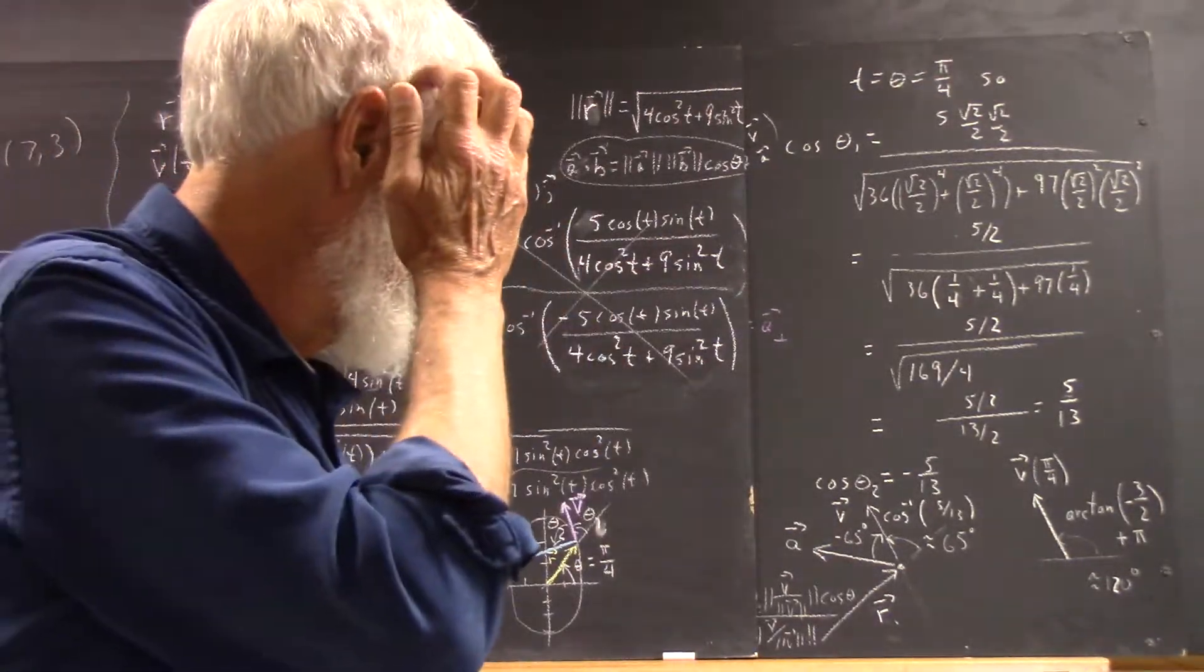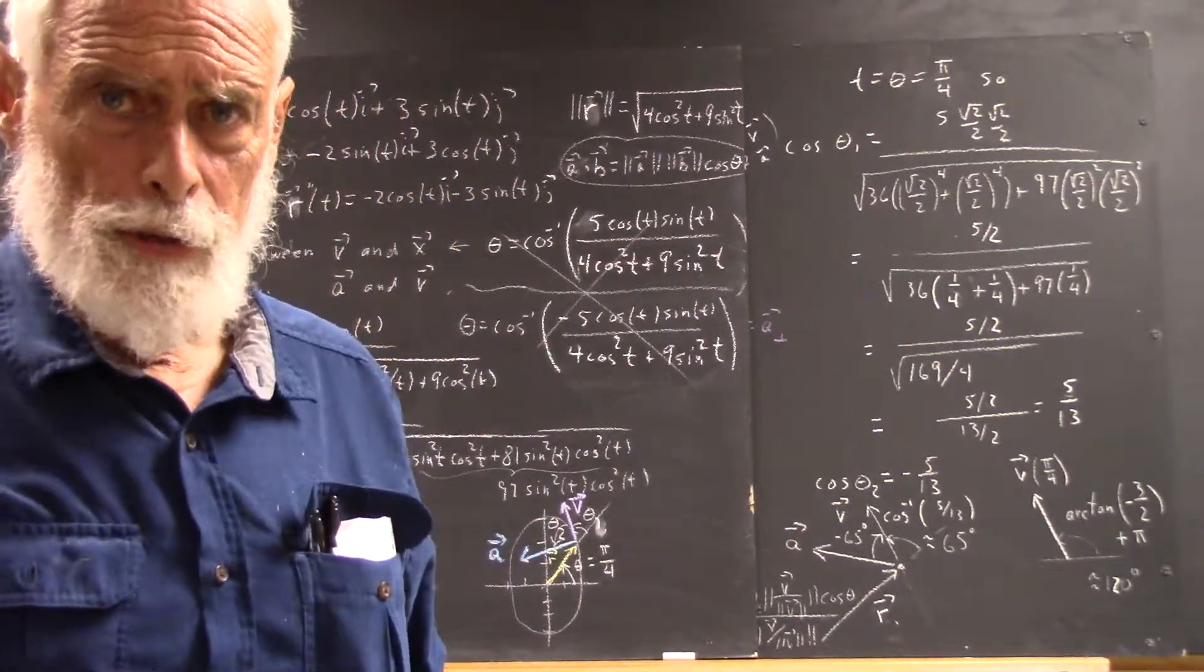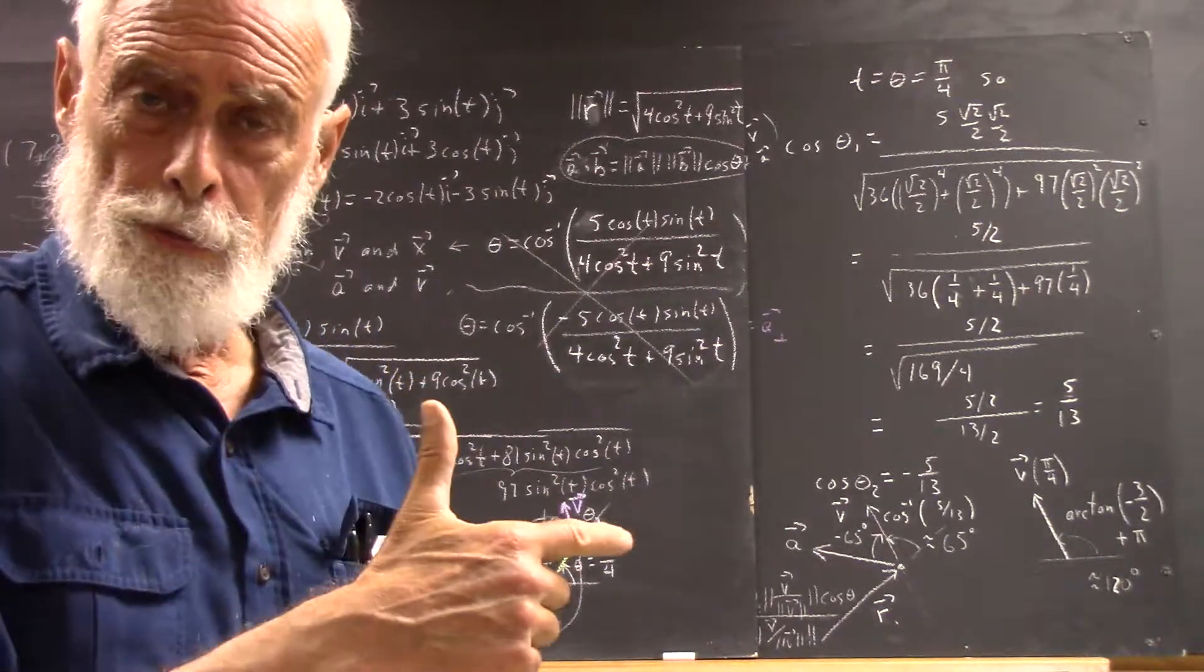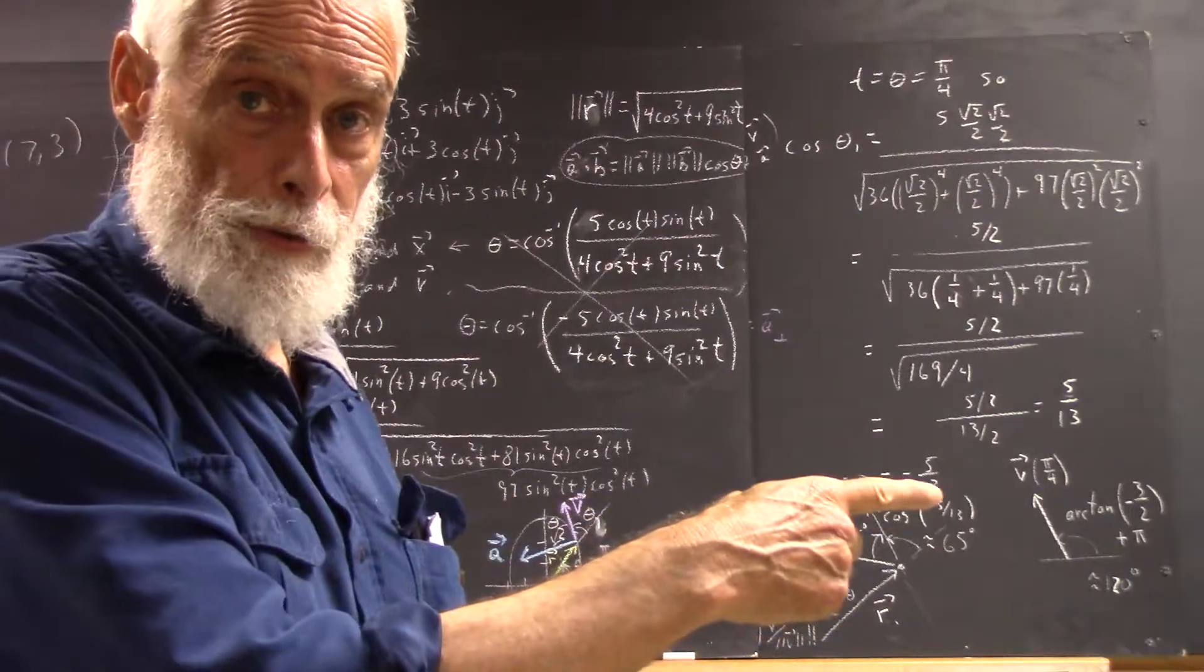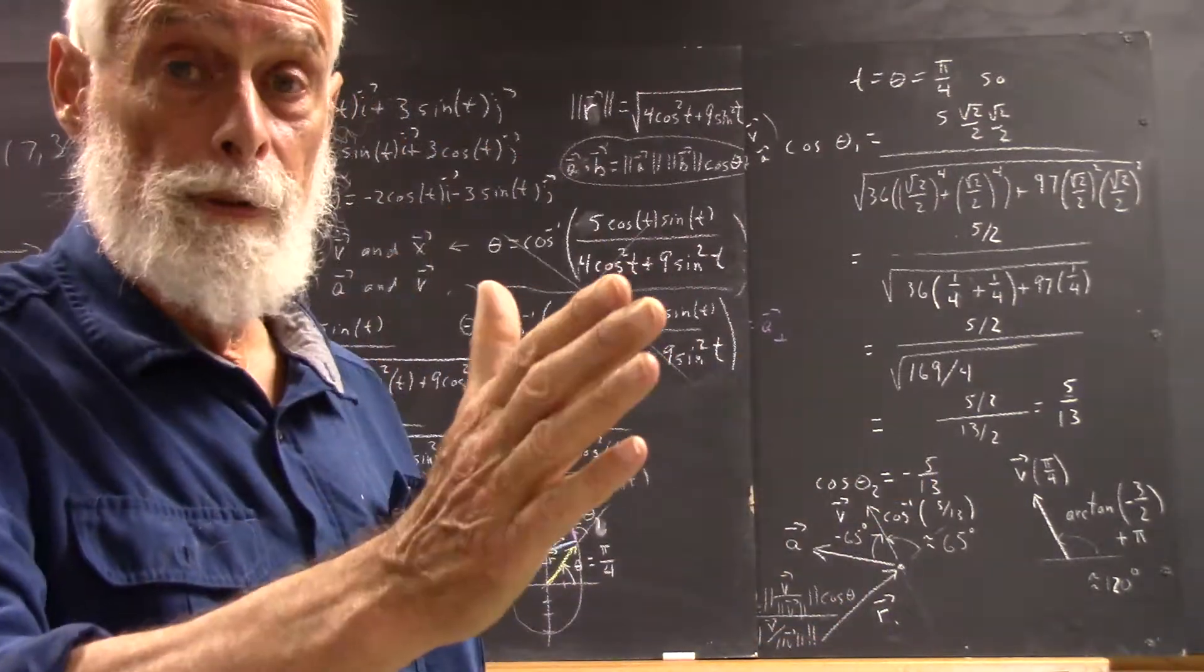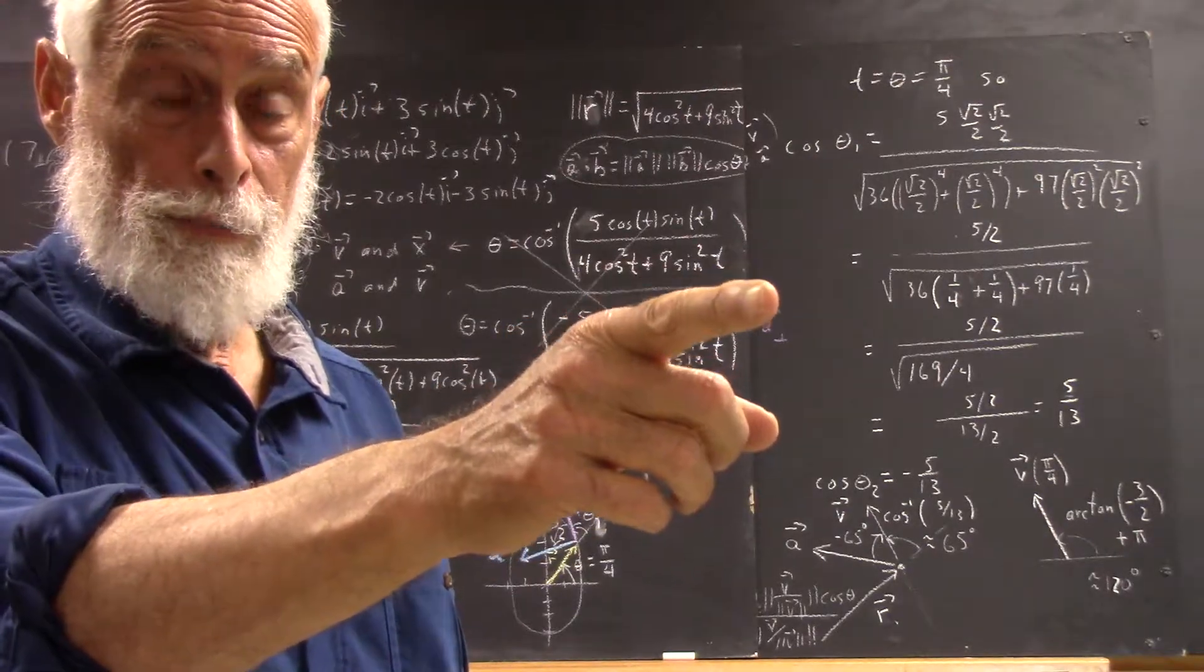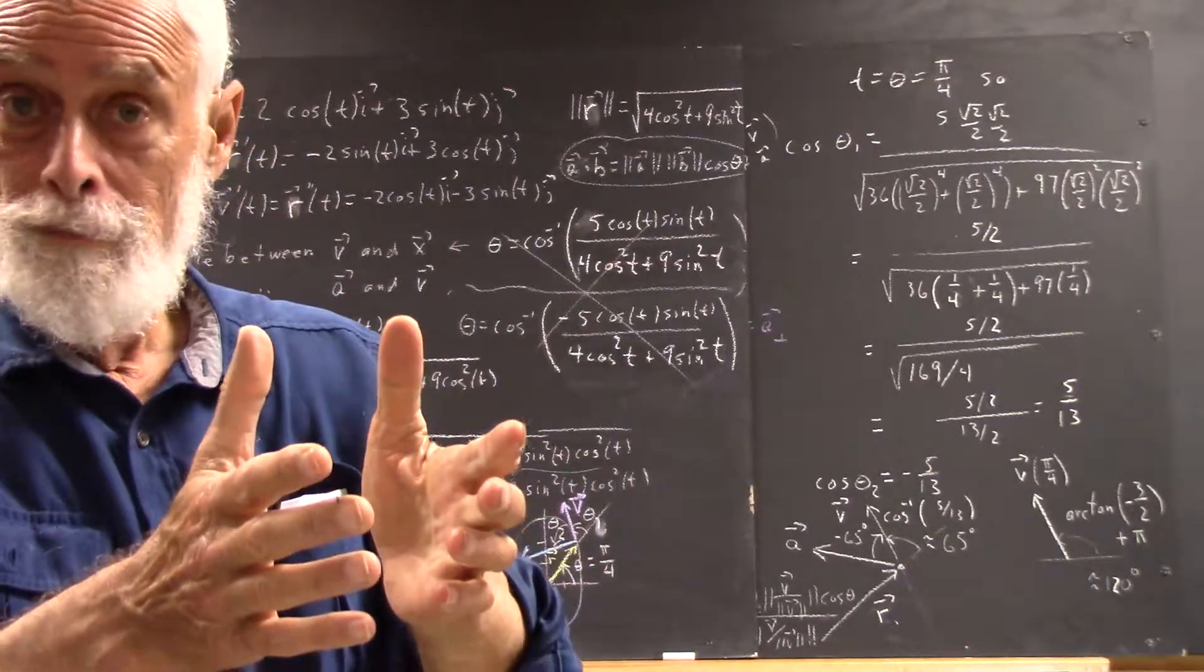Now, my acceleration vector is either speeding me up or slowing me down, and it's also changing my direction. So, there's a component to the acceleration in this direction. If I'm speeding up, we'll have a component in my direction of motion. If I'm slowing down, we'll have a component opposed to my direction of motion.